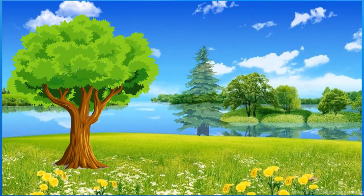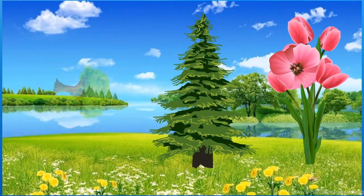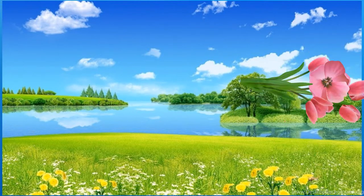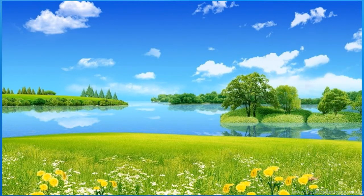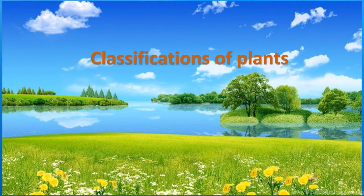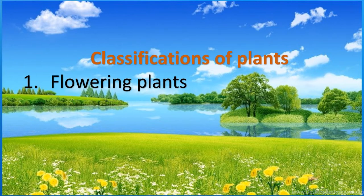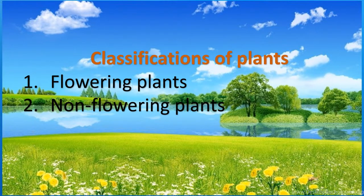Plants are classified into two groups. These are the classifications of plants. Number one is flowering plants, and the other one is non-flowering plants. These are the two classifications of plants.